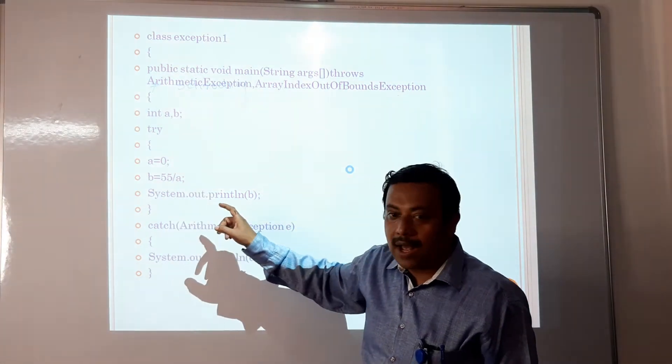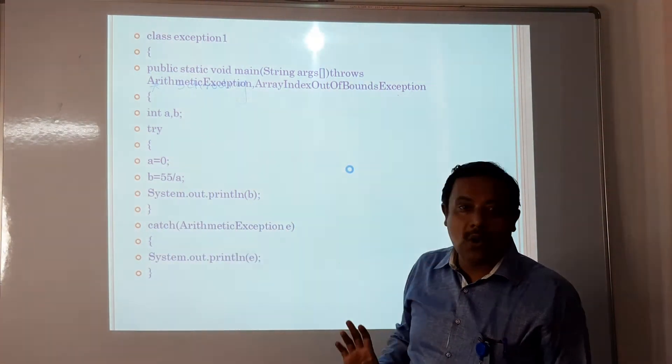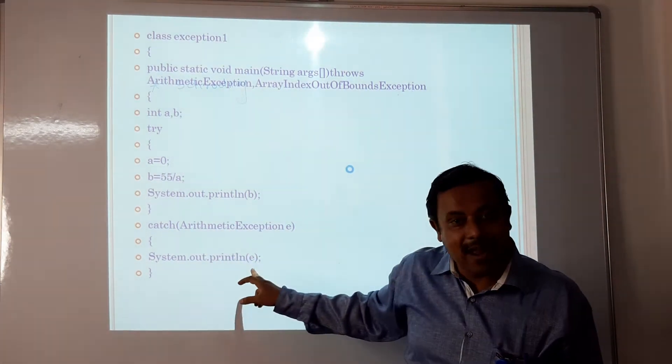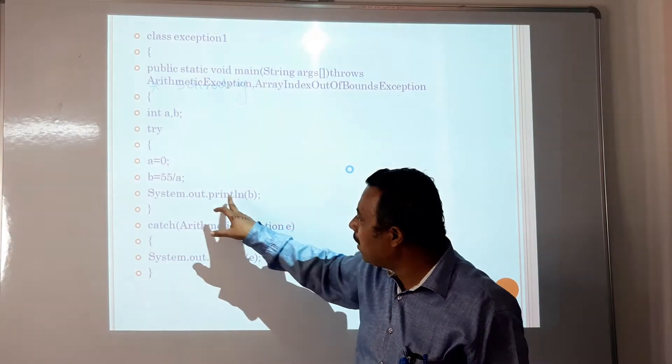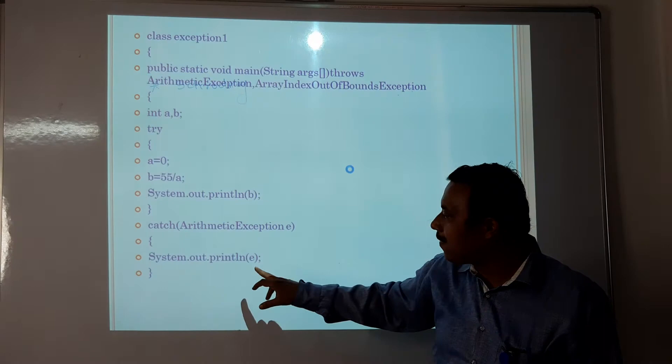When we are going to divide a number by zero, divide by zero error occurs, which is handled by ArithmeticException class. Here in try block, divide by zero error occurs, which is caught by ArithmeticException class.